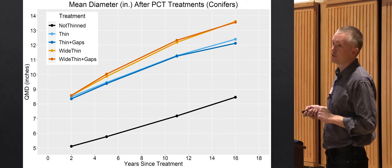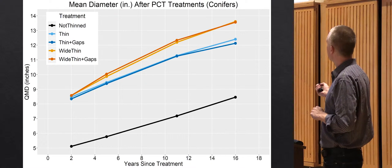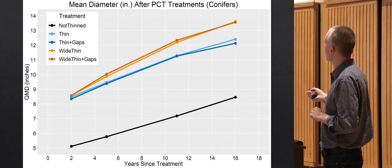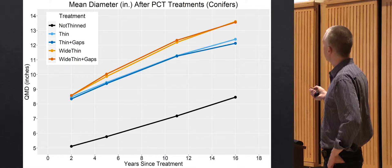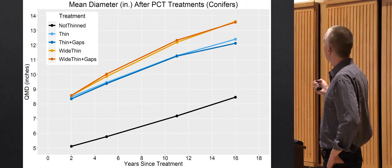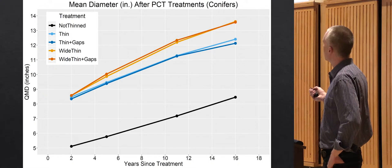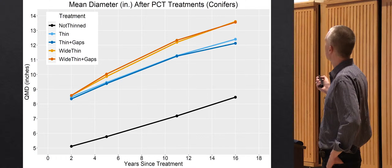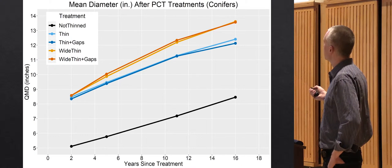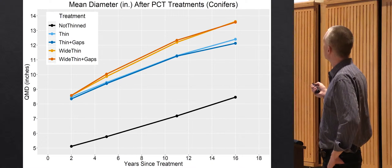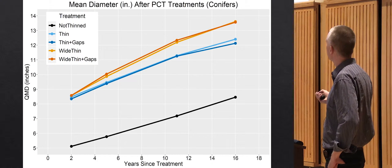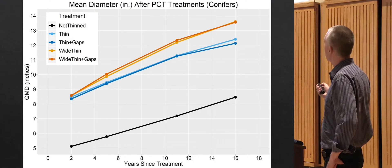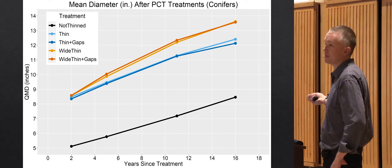Looking at diameter growth of these trees over time, this is years since treatment going out to 16 years. QMD is just another way of calculating average diameter of trees in these treatments. You can see that with our standard pre-commercial thinning to 300 trees per acre, if you look closely, the growth increase was more rapid early on and is starting to level off. Where you left fewer trees per acre, each tree had more room to grow. These two orangish lines represent the wide thinning, and those increased in diameter more. The growth rate there is not really tapering off like it is at 300 trees per acre. They still have more room to grow even after 16 years.